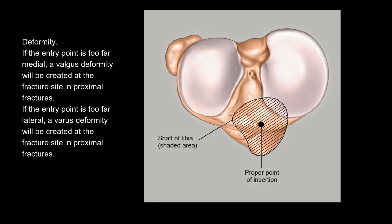Deformity: if the entry point is too far medial, a valgus deformity will be created at the fracture site in proximal fractures. If the entry point is too far lateral, a varus deformity will be created at the fracture site in proximal fractures.